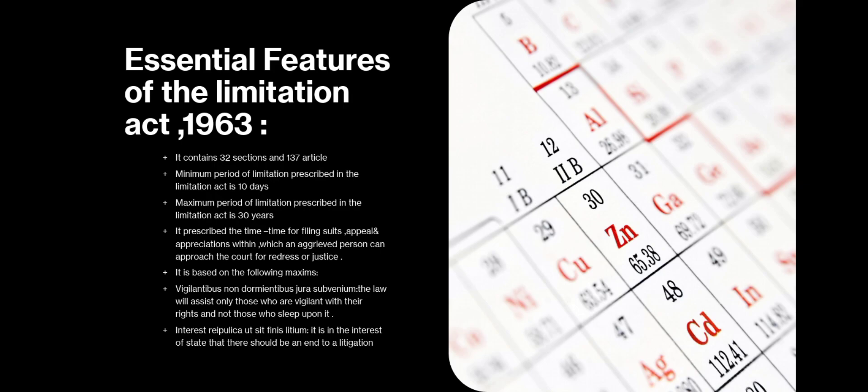We will discuss the essential features of the Limitation Act of 1963. First, it contains 32 sections and 137 articles. The minimum period of limitation prescribed in the Act is 10 days, and the maximum period is 30 years. It prescribes the time limit for filing suits, appeals, and applications within which an aggrieved person can approach the court for redress and justice.